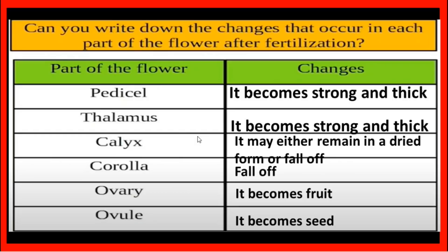Thalamus — it becomes strong and thick. Calyx — it becomes a dry form or falls off. Corolla — it falls off. Ovary — it becomes fruit. Ovule — it becomes seed.